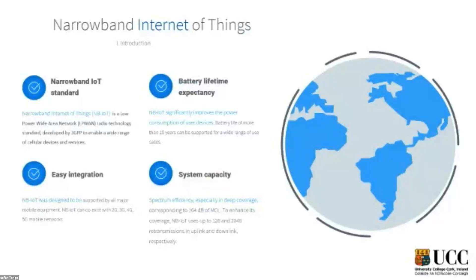I want to start by explaining a little bit of NB-IoT, or narrowband IoT, for those who don't know. NB-IoT is a 3GPP standard based on existing LTE and similar telecommunication technologies. One of the main advantages of narrowband IoT is the battery life expectancy, which should be at least 10 years on two standard AA batteries.